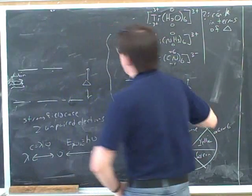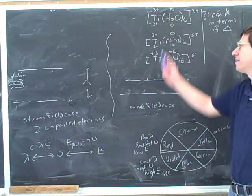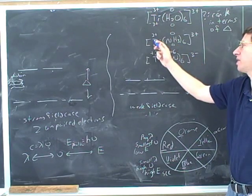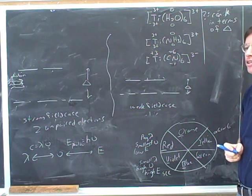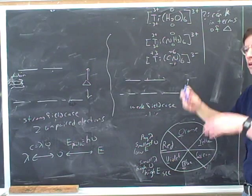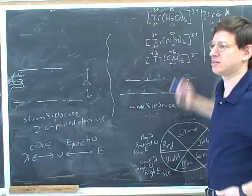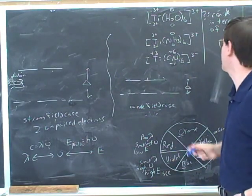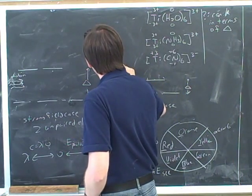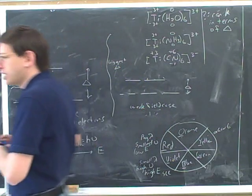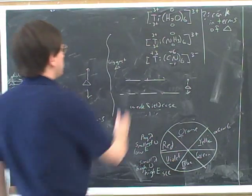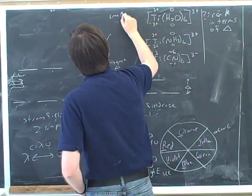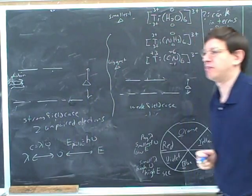You started by finding the oxidation numbers, and the main thing you discovered is that all of the metals have the same oxidation numbers — so we can't use oxidation numbers to differentiate them. Cyanide has the biggest delta because cyanide is a strong-field ligand — it's the strongest in the spectrochemical series, which means it has the biggest delta. Ammonia comes before water in the spectrochemical series; there's not a big difference between them, but ammonia comes before water. So we would expect that the water compound has the smallest delta.